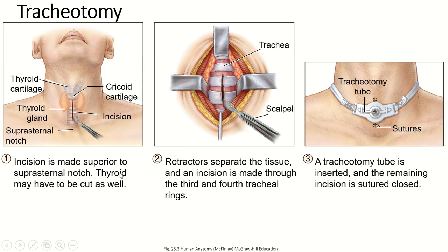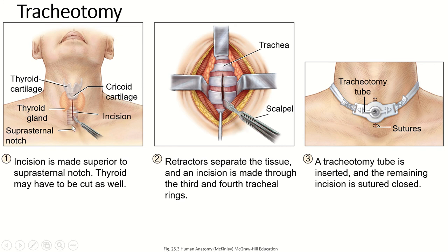If your trachea does get blocked or collapsed, doctors can do what they call a tracheotomy. Remember, 'otomy' means to cut — so a tracheotomy is cutting the trachea to bypass the blockage and allow air to pass into the lungs. This is done, for example, when someone is choking, which most often happens when something gets stuck under the epiglottis so that air can't pass into the larynx. By opening a passage here, you enable the air to bypass the blockage and go into the lungs.